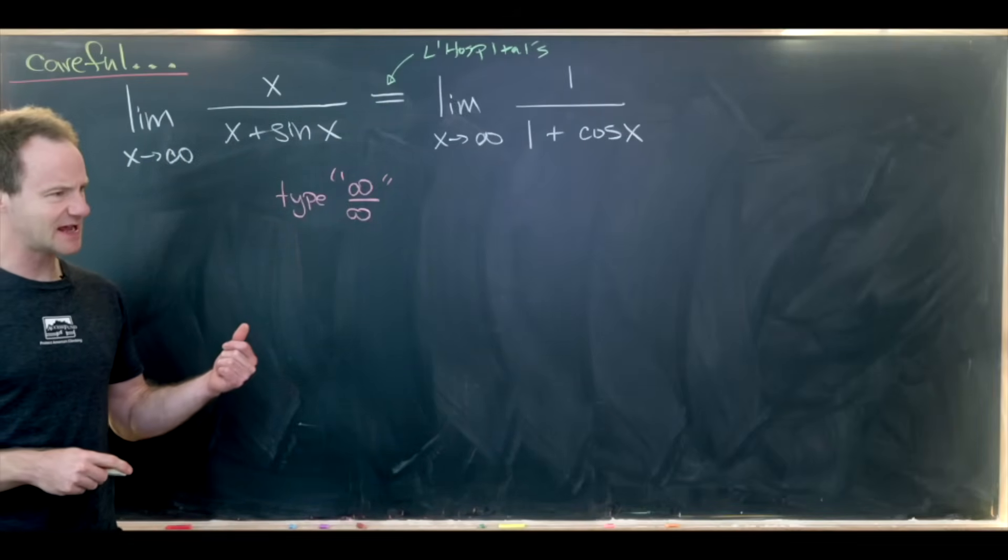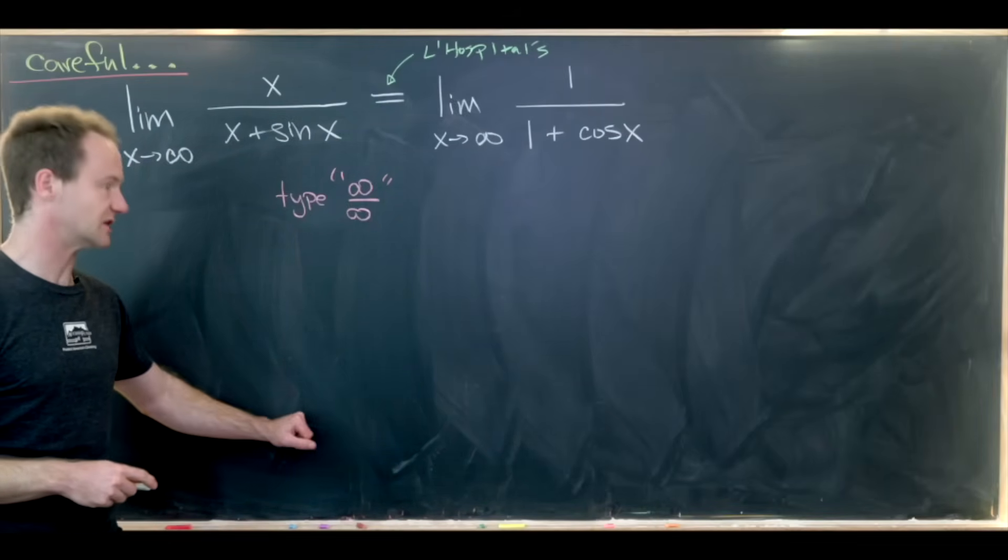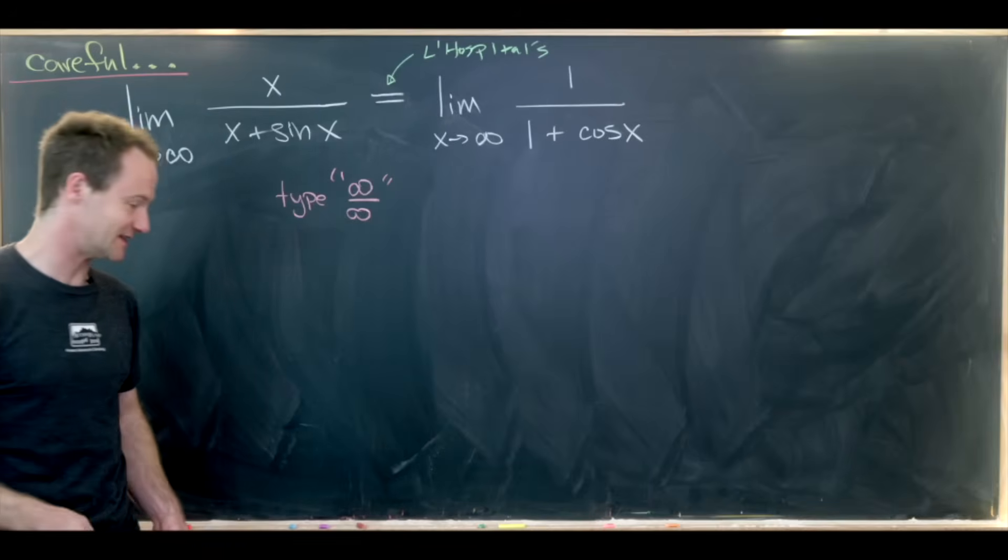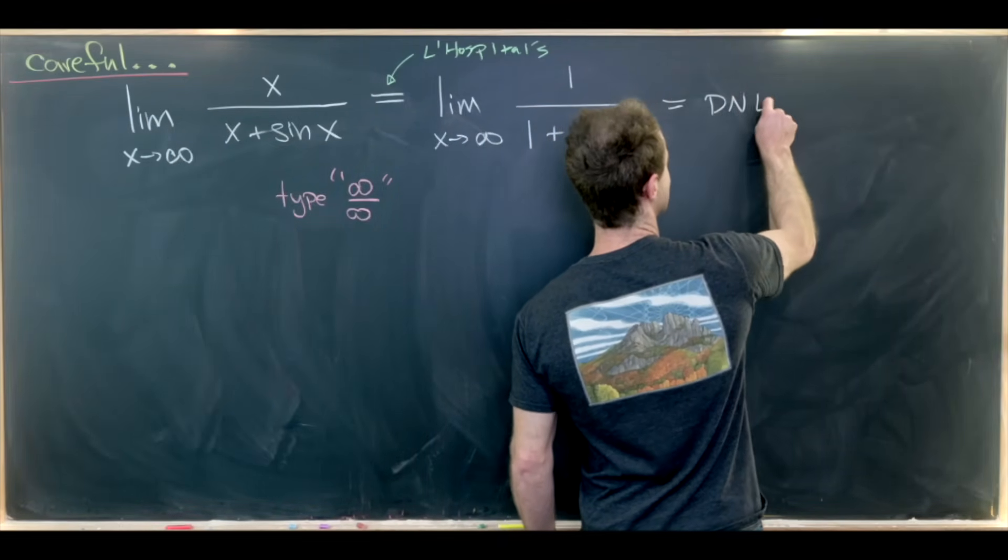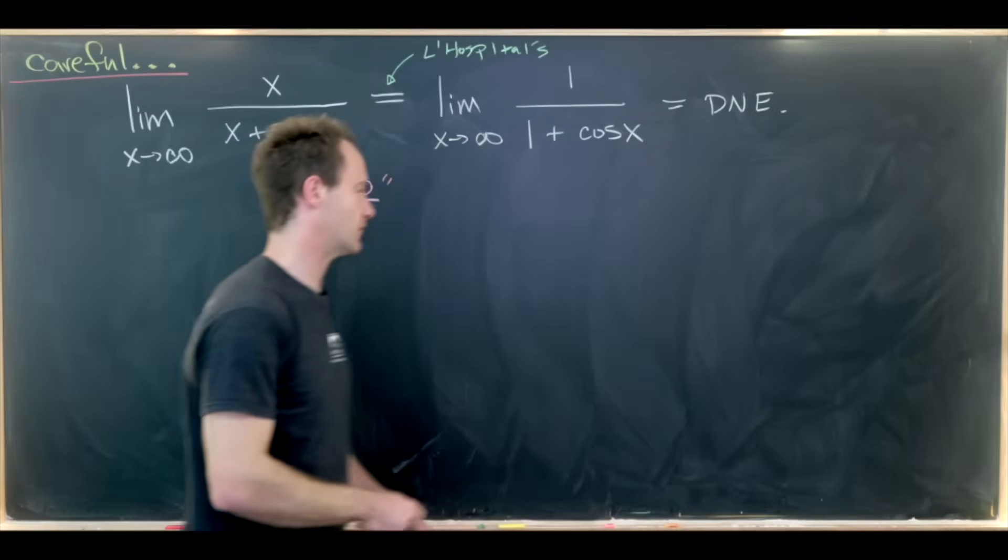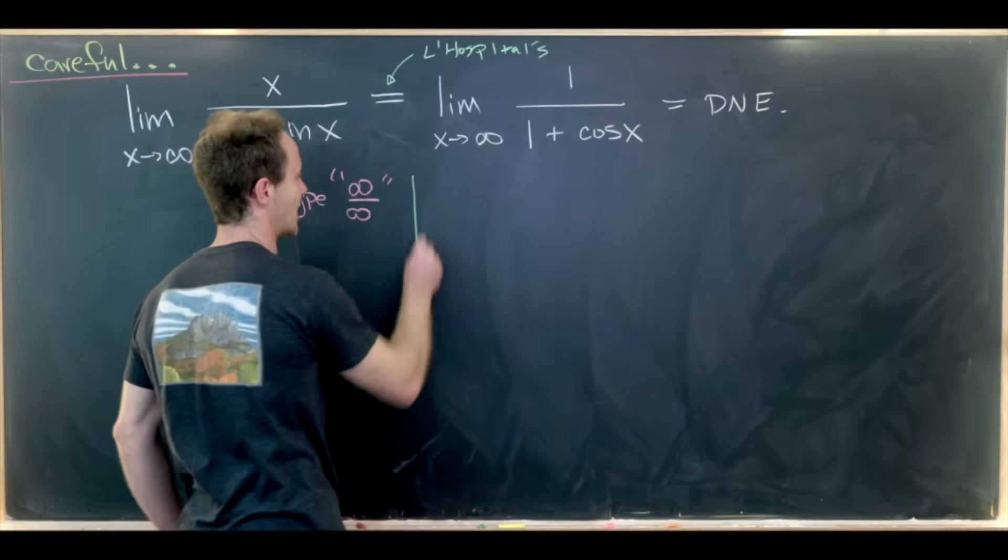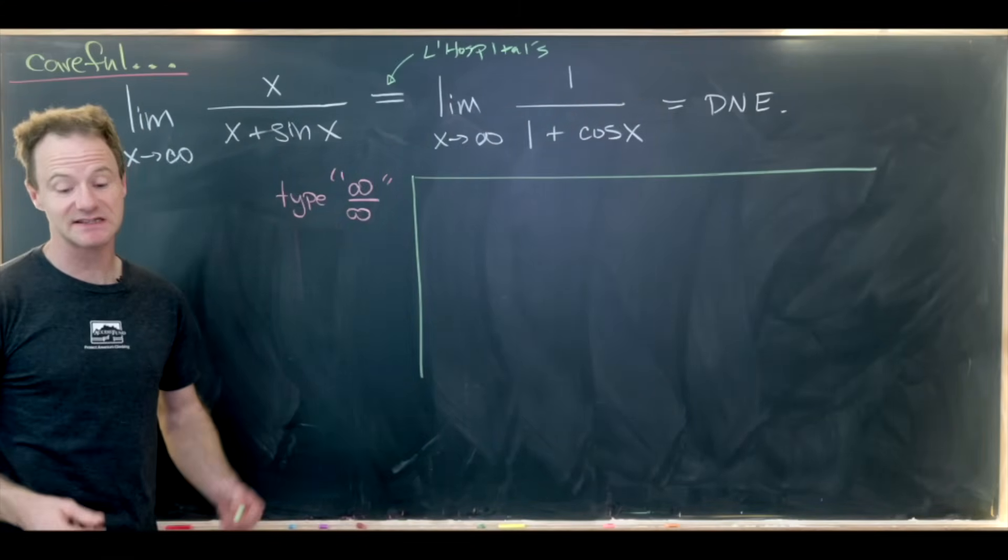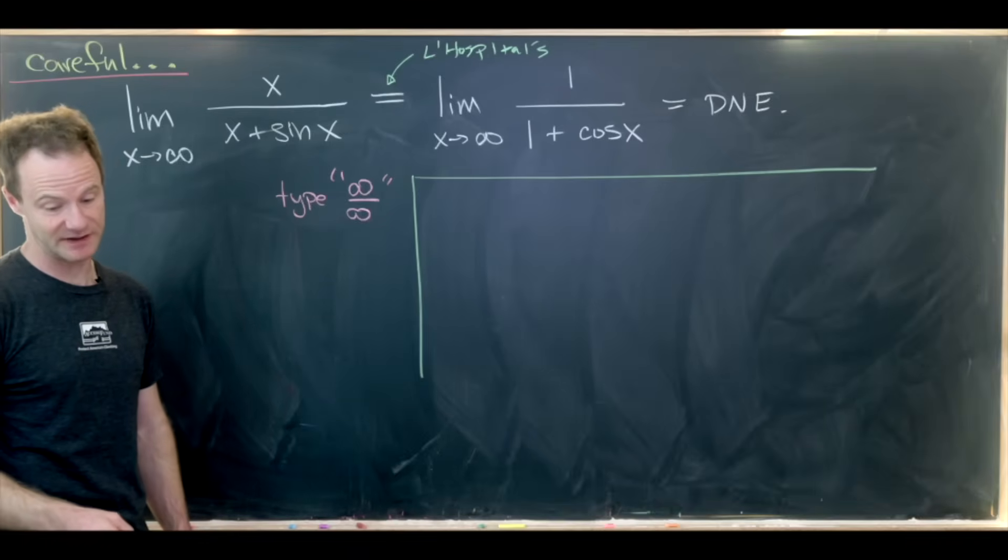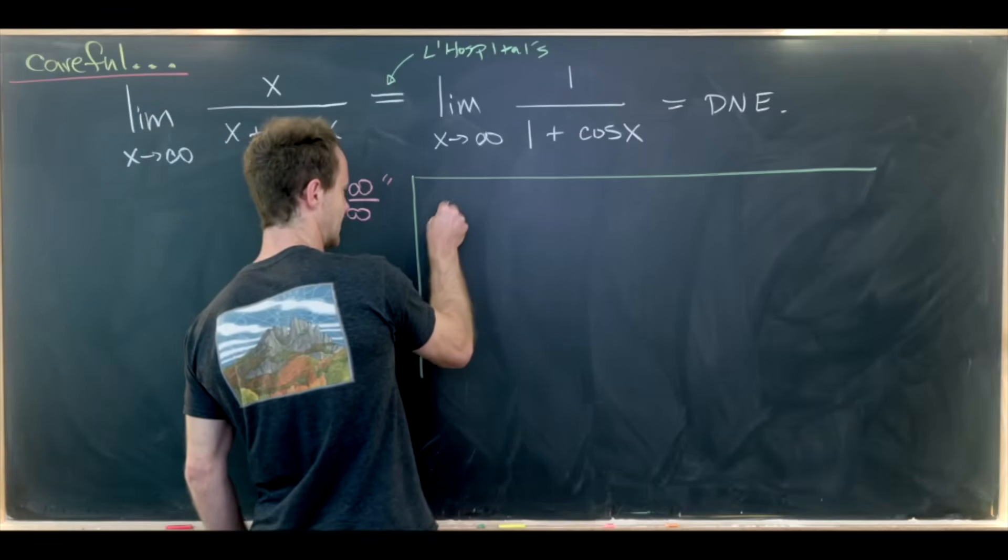But now by taking some sequential limits we can show that this limit does not exist. So I'll just put that this does not exist to start off with, and then maybe we'll check in this green box why it doesn't exist by taking sequential limits.